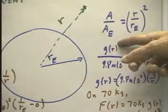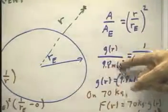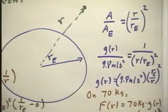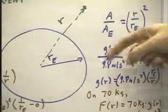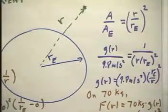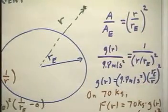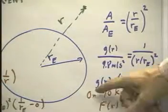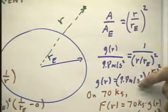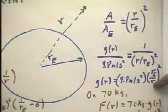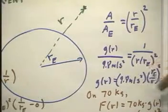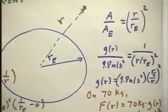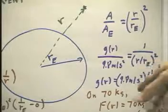Remembering that g(r) is in proportion to 9.8 meters per second squared as the reciprocal of the squared radii, using the fact that we have an inverse proportionality between the radius and the acceleration of gravity, we can write this. And then we can write g(r) as 9.8 meters per second squared times (r_e/r)², the reciprocal of r/r_e being r_e/r.